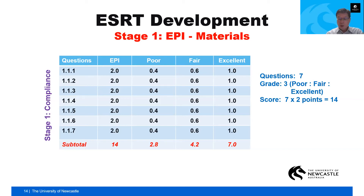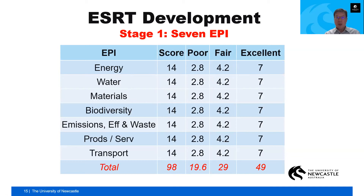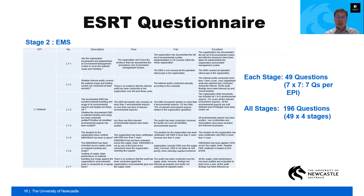Across all seven EPIs in stage one — materials, energy, water, biodiversity, emissions, products and services, transport — each EPI has a perfect score of 14. So 14 times 7 equals 98, which we round off to 100. That's the perfect score for one stage. Stages two, three, and four each follow the same structure, giving 100 points per stage and 400 total. Scores range across poor, fair, and excellent — only three levels.